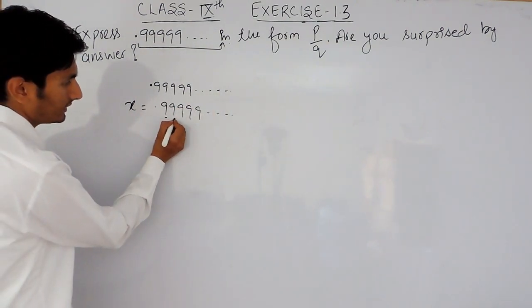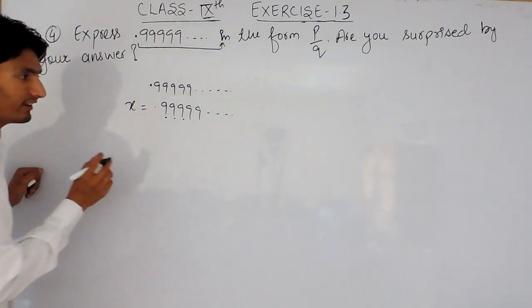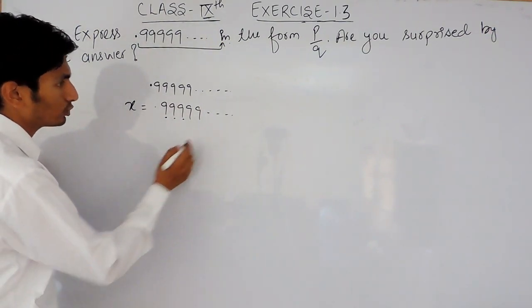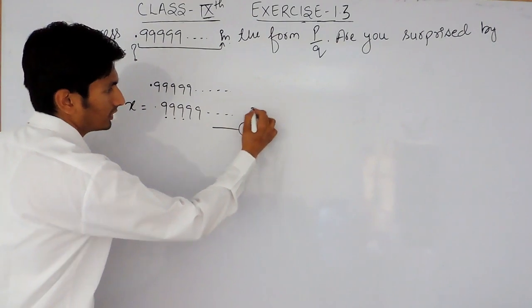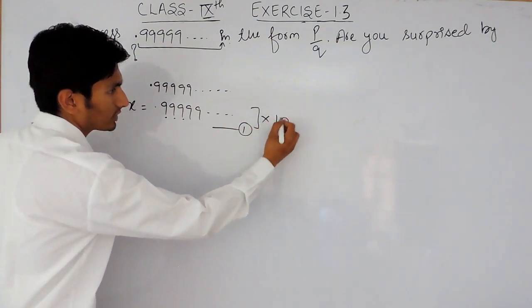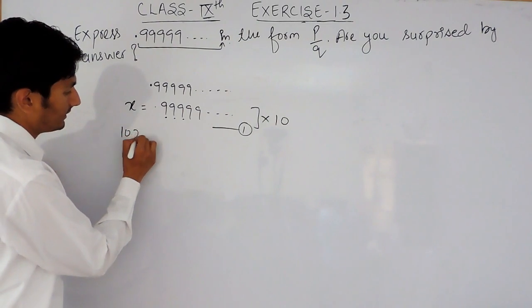Because there is only one digit that is repeating, this is the first equation. So you have to multiply this first equation with 10.